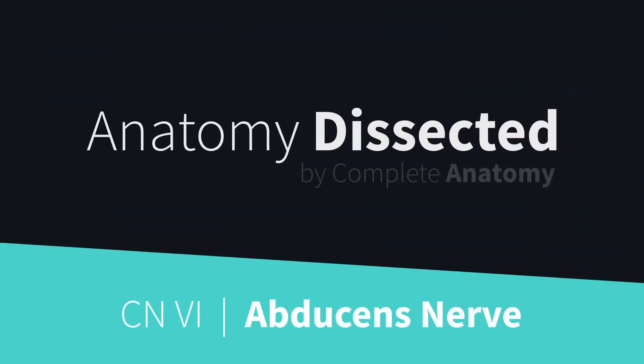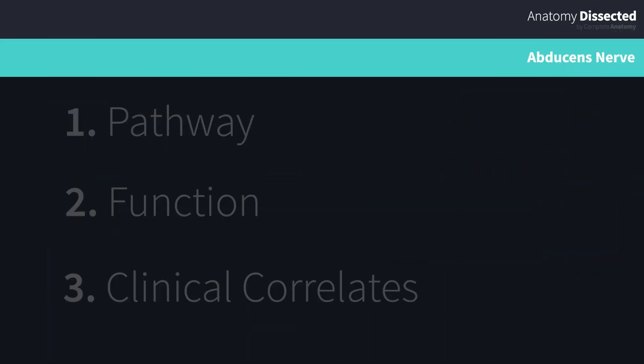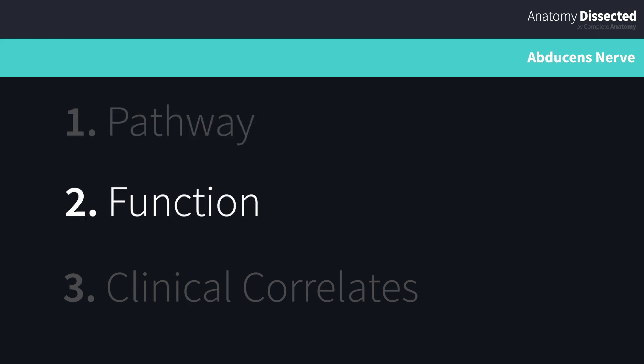Welcome back to Anatomy Dissected by Complete Anatomy. We're still making our way through all of our cranial nerves, but this time we're going to focus on cranial nerve 6, the abducens nerve. As we've done with some of our previous videos, we'll start by exploring the pathway of this nerve, then examine the muscle it innervates and its function, and finally finish off by looking at some of the clinical correlates.